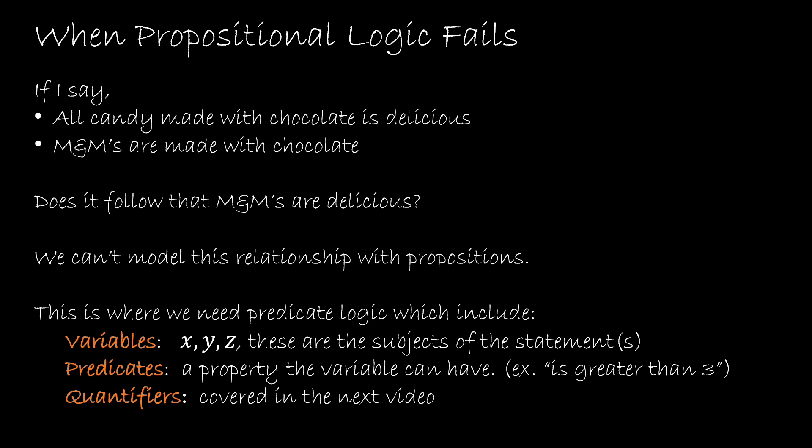Predicate logic has three parts — a minimum of two. In this video we're going to look at the variables and the predicates, and then in the next video we'll take a look at quantifiers, which you may or may not have.